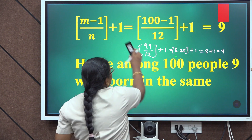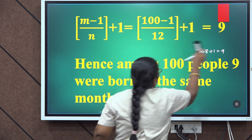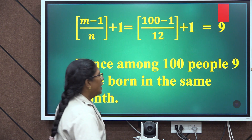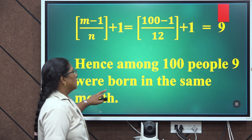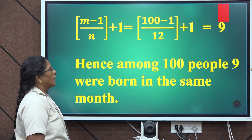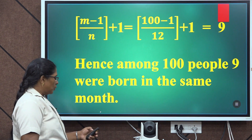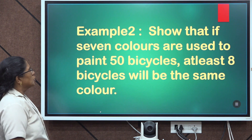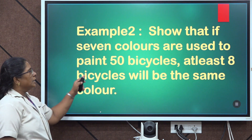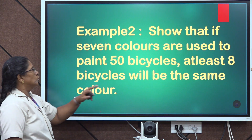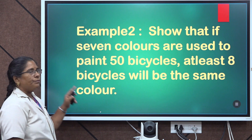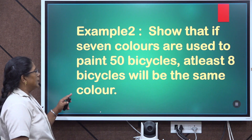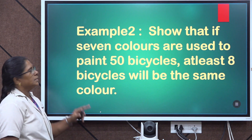Then by the generalized Pigeonhole Principle, we have proved that among 100 people, 9 people were born in the same month. Now let us move to the next problem.